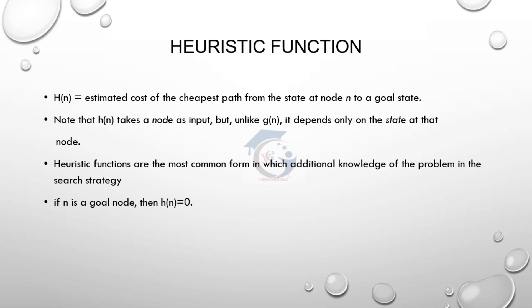Best first search is BFS. Note that breadth first search is also called BFS. The heuristic function h(n) estimates the cheapest path from node n to the goal state. If node n is the initial state, we estimate the cost h(n) to reach the goal state.